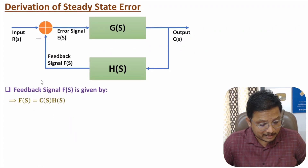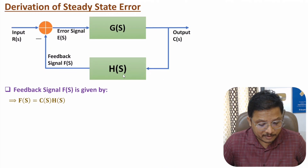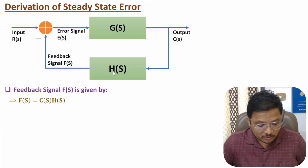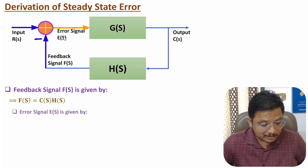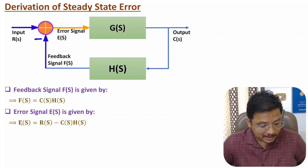Here feedback signal F(s) is the signal coming after feedback. Here the feedback is H(s), and the output is C(s). We give this output C(s) to H(s), so F(s) equals C(s) times H(s). And the error signal is input R(s) minus the feedback signal, so error signal E(s) equals R(s) minus C(s)·H(s).